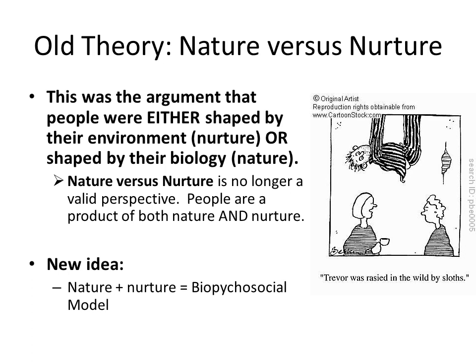In the olden days, the theory was that people were either shaped by their environment, otherwise known as nurturing, or shaped by their biology — in other words, nature. This battle between nature and nurture was seen as the only two options. More recently, people have come to understand that our personalities, who we are as people, are a product of both nature and nurture. So instead of an 'or,' it's an 'and.'